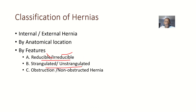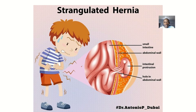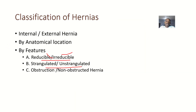We also have strangulated and unstrangulated hernias. Strangulated simply means there is a twisting, and this twisting is leading to an occlusion of blood supply. So a hernia can lead to occlusion of blood — that's strangulated — or no occlusion of blood — that's unstrangulated.